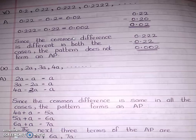Since the common difference is different in both cases, the pattern does not form an AP. Students, when you get the first two answers different, don't go for the third subtraction. Stop there and write: the pattern does not form an AP.